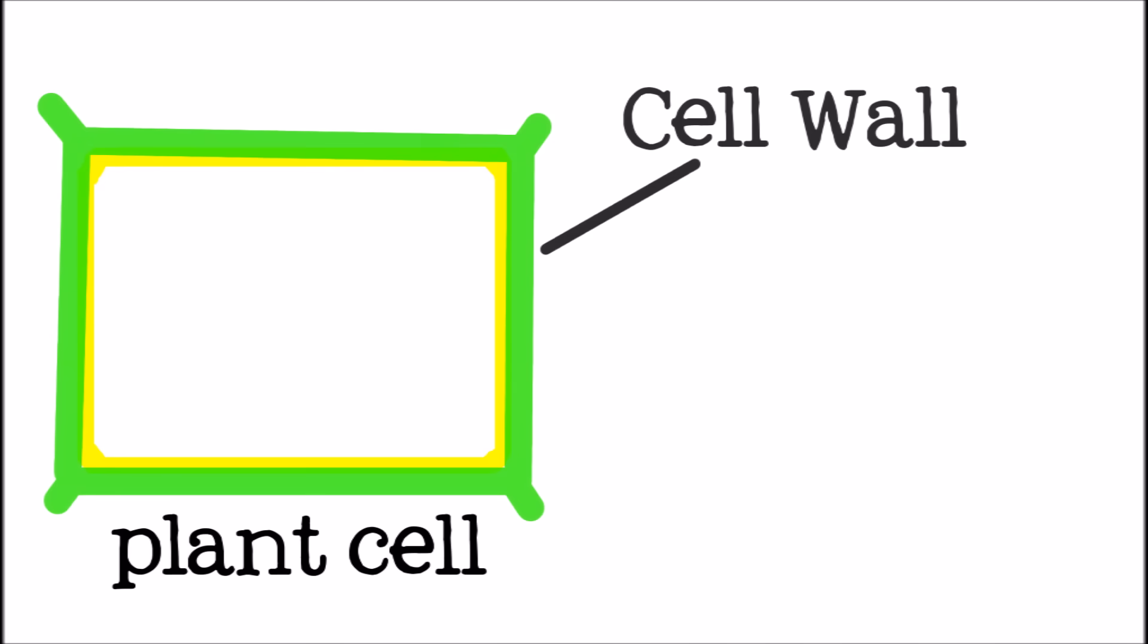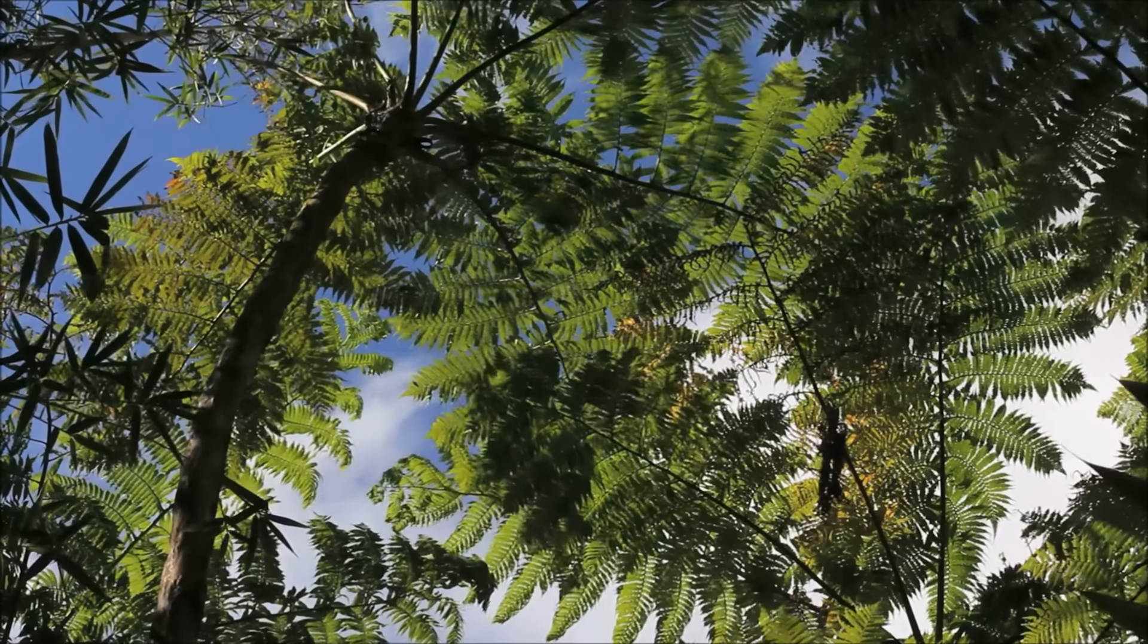Plant cells have an extra layer called a cell wall that surrounds the membrane. The cell wall is tough and stronger than a membrane. Cell walls provide support for plants to grow and keep their shape.